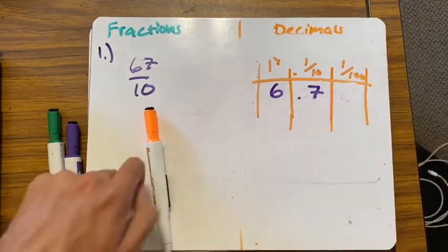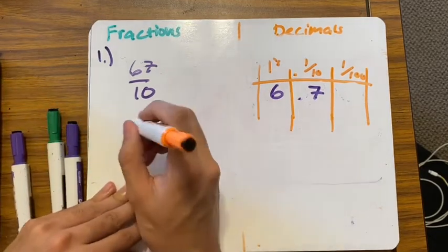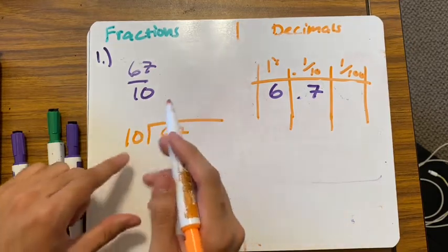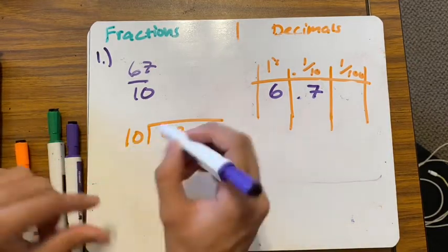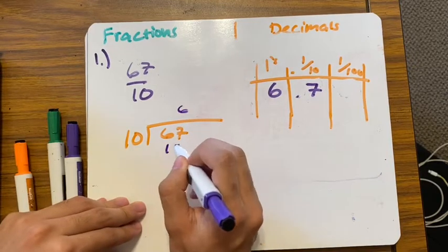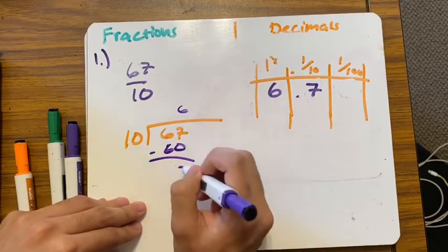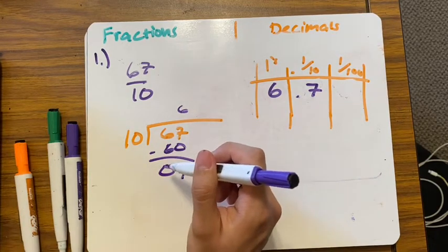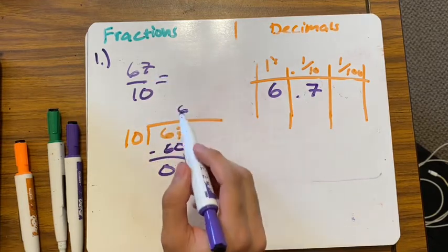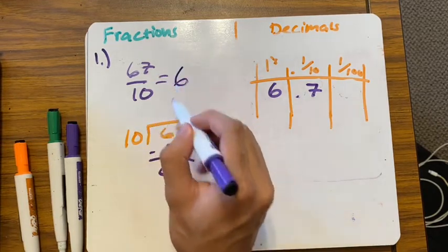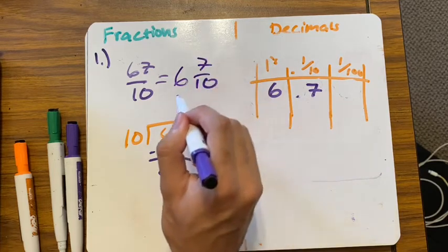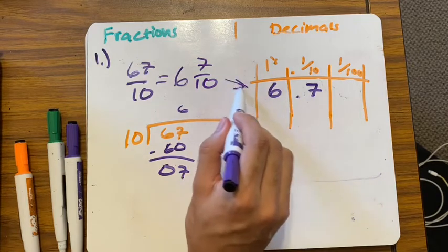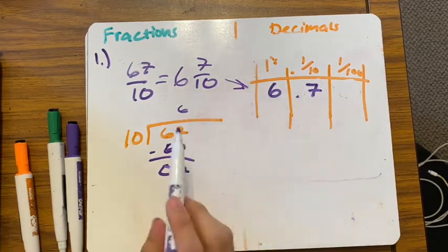Let's double-check with division: how many times does 10 go into 67? Six times. 10 times 6 is 60; 10 does not go into 7, so I'm finished. My answer is six wholes and seven tenths — 6.7. That's how we do it.